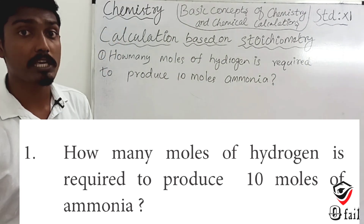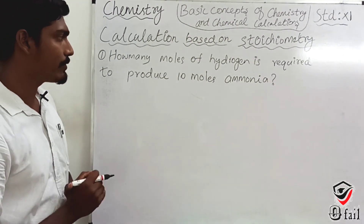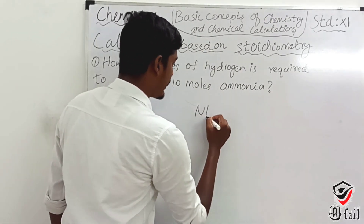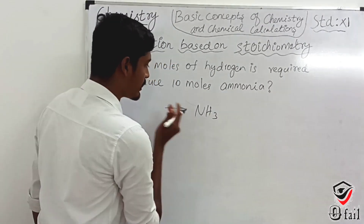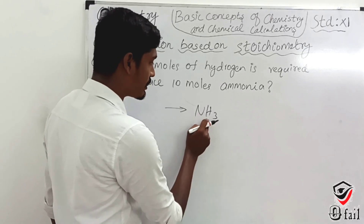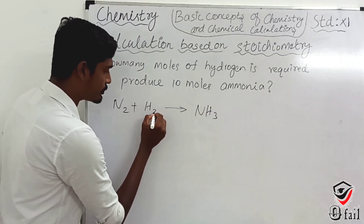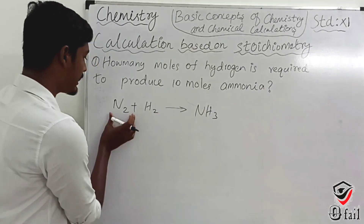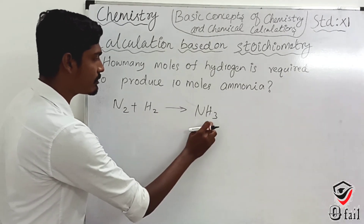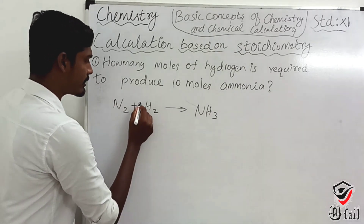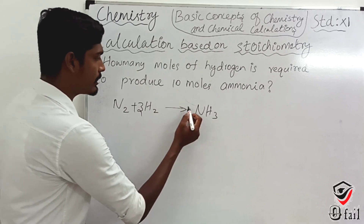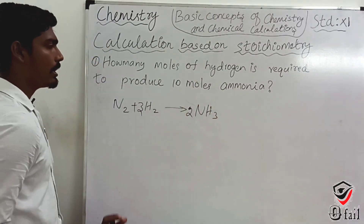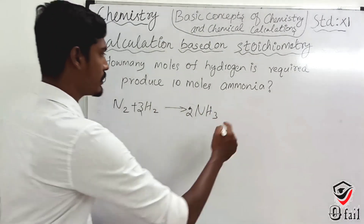Now we have the basic equation for ammonia preparation. Ammonia is NH₃. The reactants are nitrogen N₂ and hydrogen H₂, giving NH₃. To balance: N₂ + 3H₂ → 2NH₃. So we have 2 nitrogen and 6 hydrogen balanced. This is the equation.